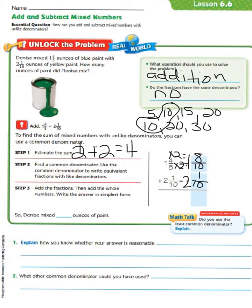If we add these together, 8 plus 1 is 9/10 and 1 plus 2 is 3. We added the fractions and then added the whole numbers and wrote the answer in simplest form. So Denise mixed 3 and 9/10 ounces of paint. Now let's look at our question: Explain how you know whether your answer is reasonable.